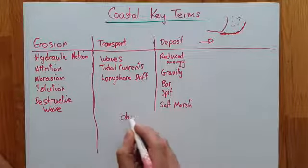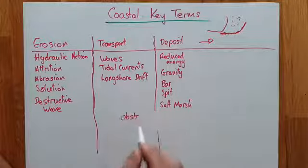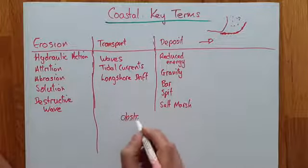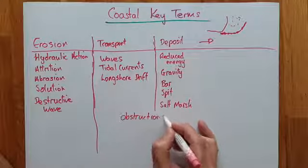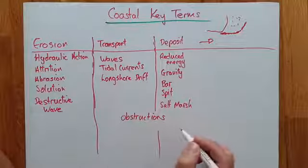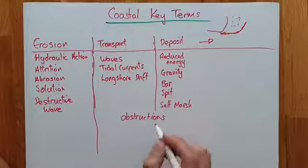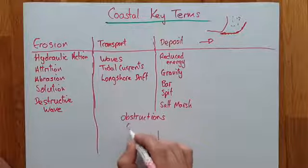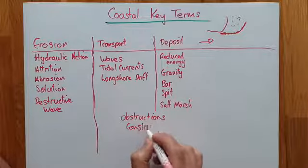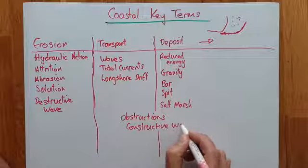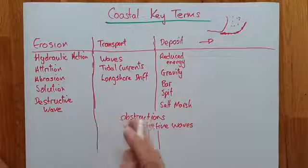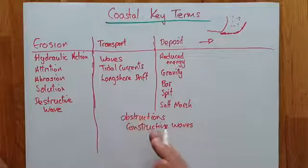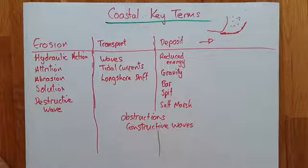There are a couple of things that cross over between transportation and deposition: obstructions — if you obstruct the transportation that's going to affect it — and constructive waves, which both transport material and deposit material, so they fall into both categories.